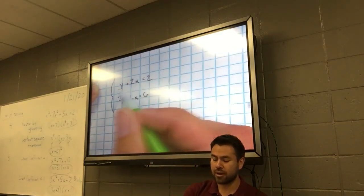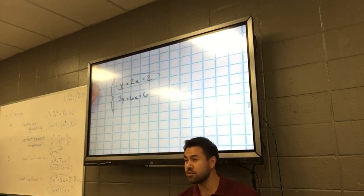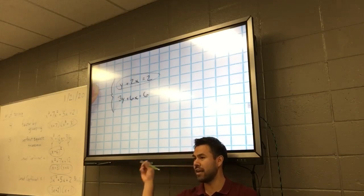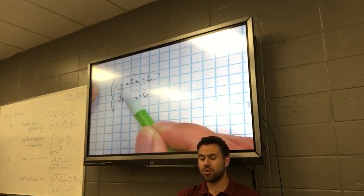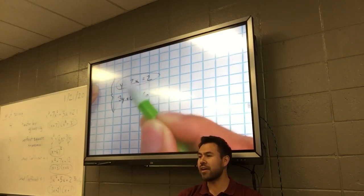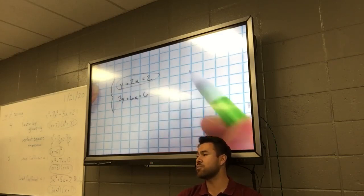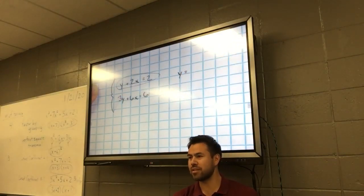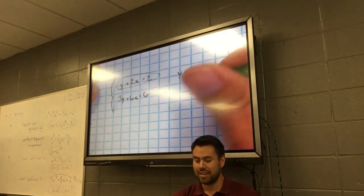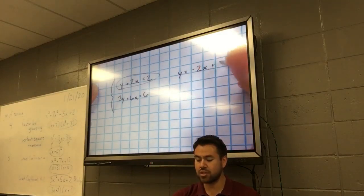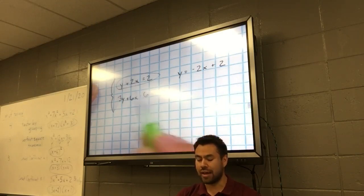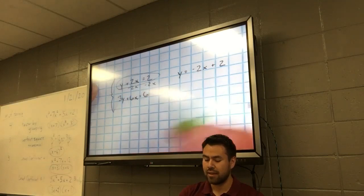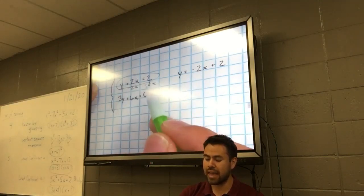So we're going to get both equations into slope-intercept form one at a time. The first equation: is y by itself? Close, but there's a 2x being added to it. How do I get rid of that 2x? Subtract 2x from both sides. What do we get? Y equals negative 2x plus 2. Remember, you put the x-term first: negative 2x plus 2. That's slope-intercept form.